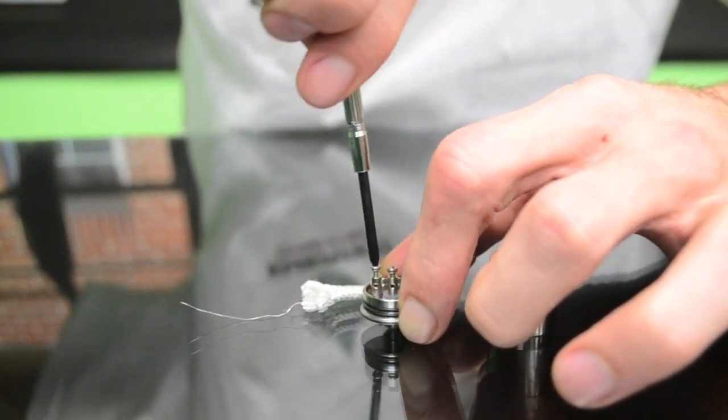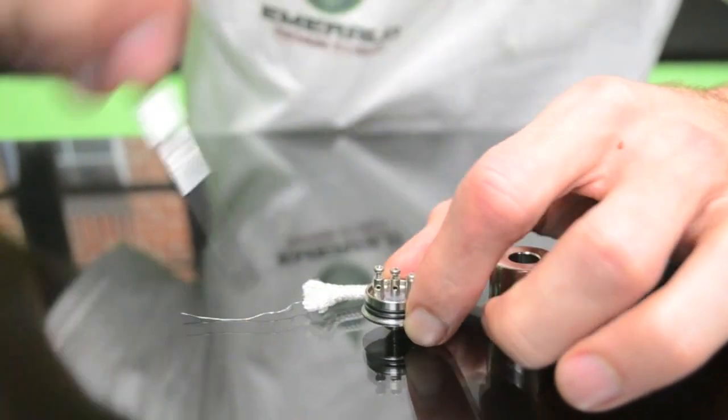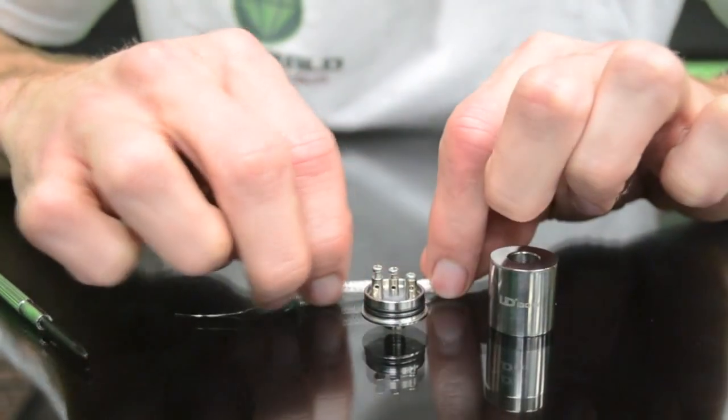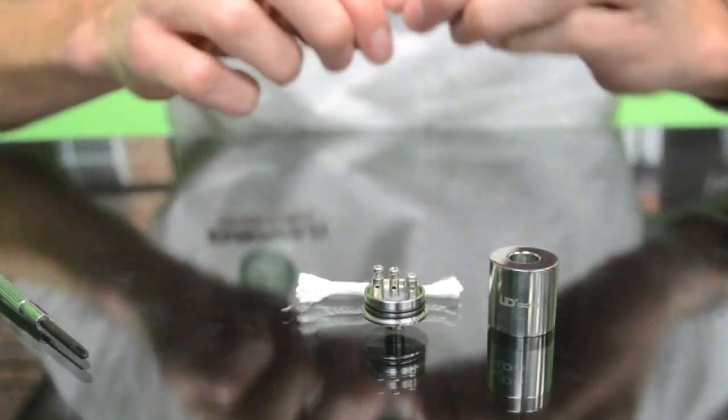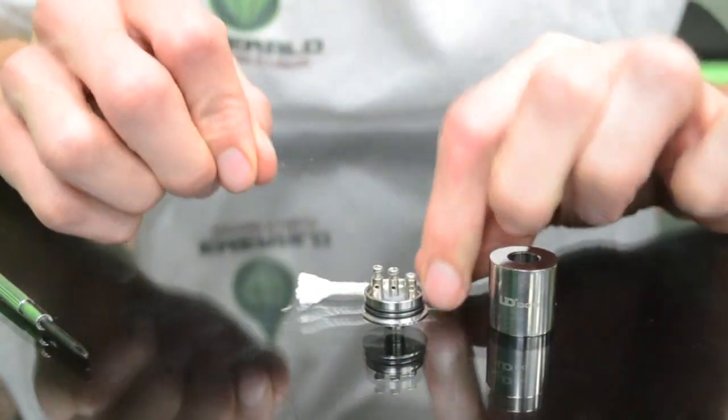The positive is usually always in the middle and the negatives are on the outside. I'm going to show you just a basic wrap on one side, and then you can do a dual coil by wrapping the other side if you want.